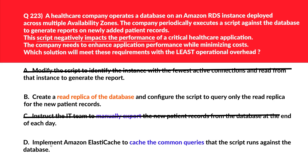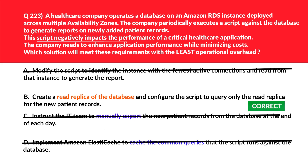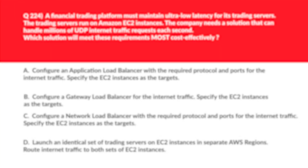Option D says implement Amazon ElastiCache to cache the common queries that the script runs against the database. While caching can improve performance, it adds complexity and may not be as cost-effective as using a read replica for this specific use case. Option B is definitely better than option D, so we'll reject option D and lock option B as the correct answer.